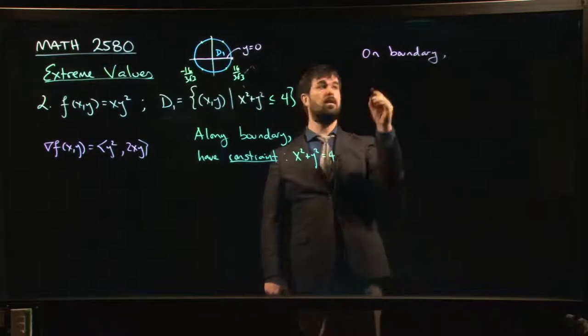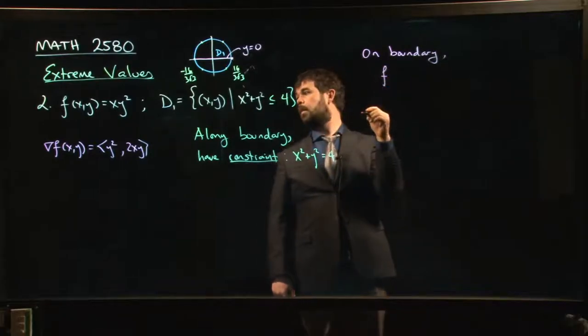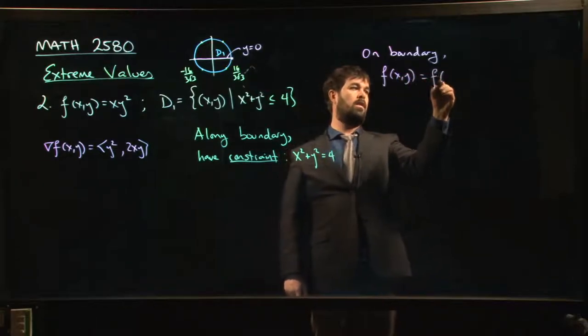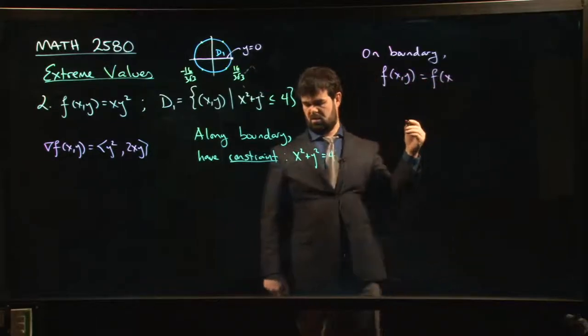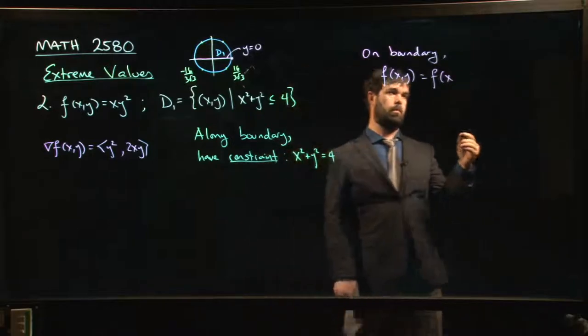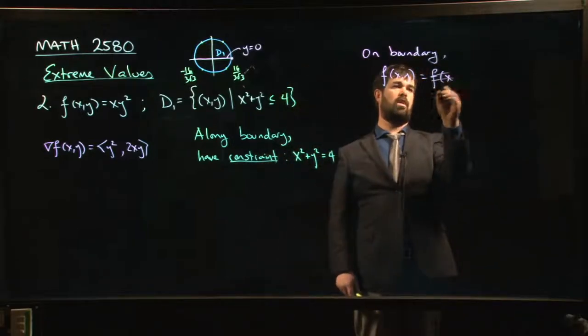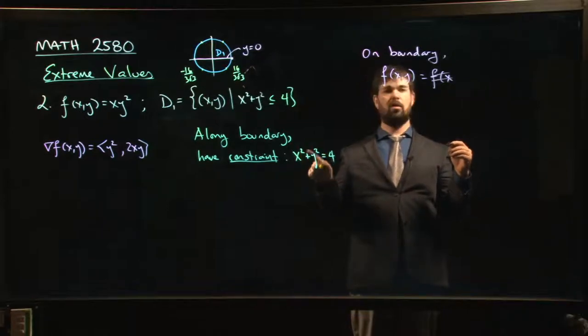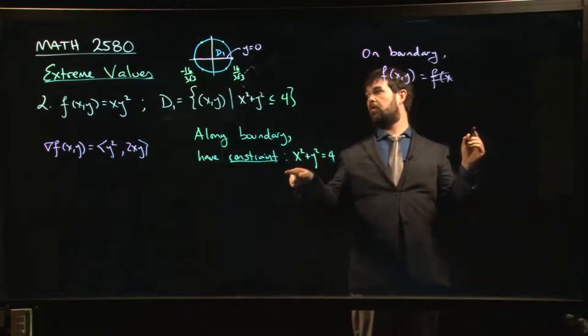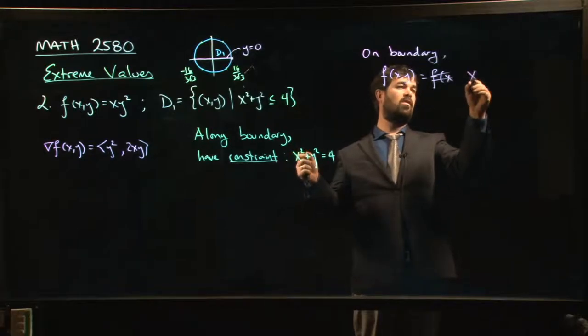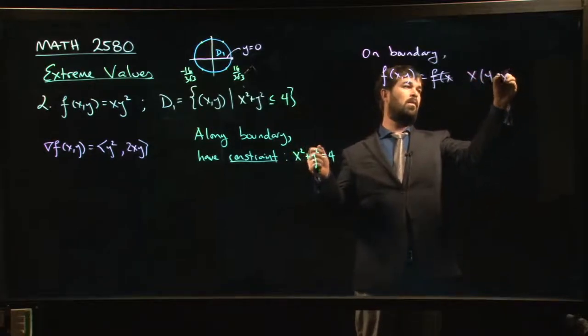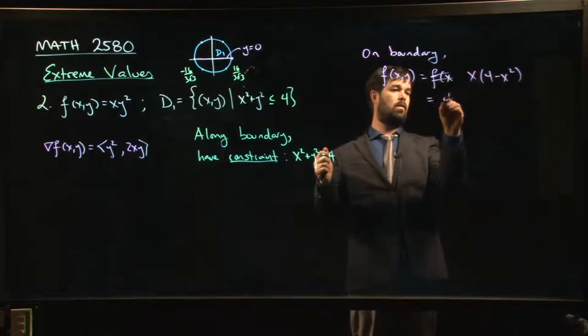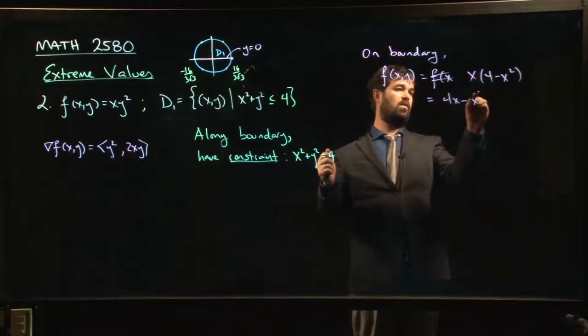We could say that f of x, y, I know what y squared is. Y squared is just 4 minus x squared. So it looks like x times 4 minus x squared, 4x minus x cubed. Well, that's just some function g of x.